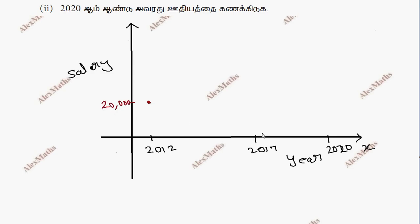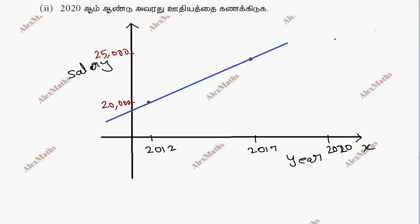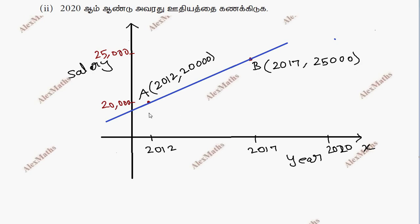Here we have 20,000 and roughly 25,000. If we join them in a straight line, we have a linear function. This is point A at (2012, 20,000) and this is point B at (2017, 25,000). Now we have a straight line.